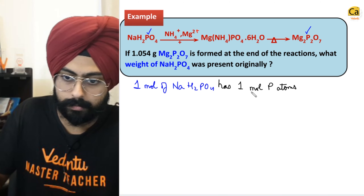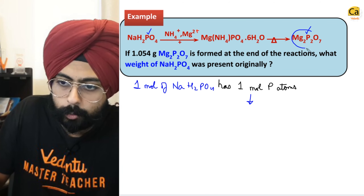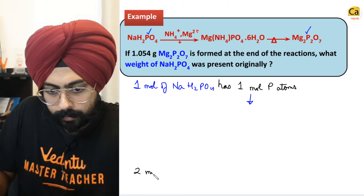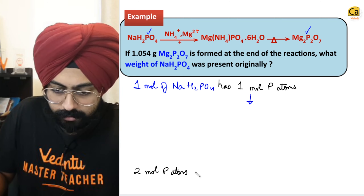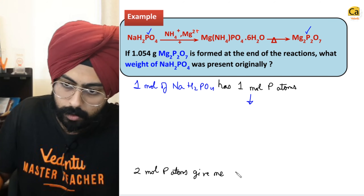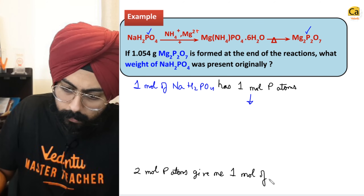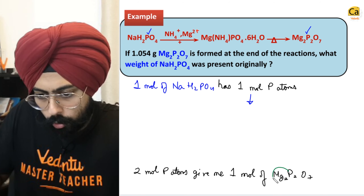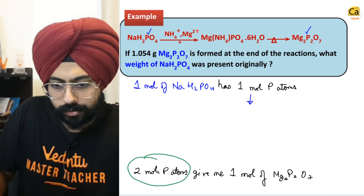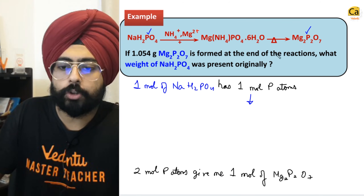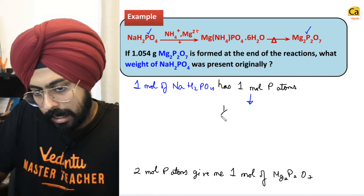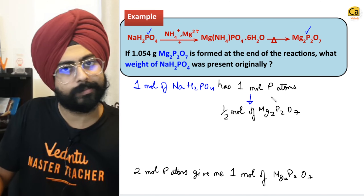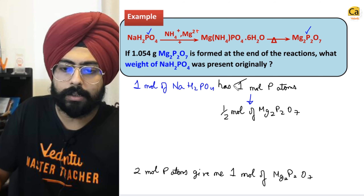One mole of phosphorus atoms — how much Mg2P2O7 can it give? Two moles of phosphorus atoms give one mole of Mg2P2O7. So one mole of phosphorus atoms will give half a mole of Mg2P2O7. If 2 give me 1, then 1 will give me half.